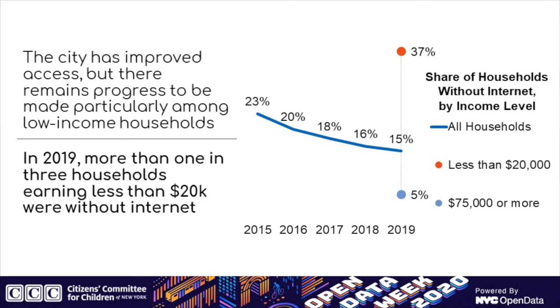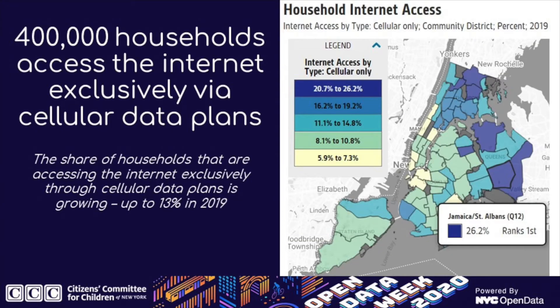Another dimension of the digital landscape is the method through which households access the internet. Increasingly prevalent are cell-only households — homes for which a cellular data plan is the only means of internet access. This was the case for 400,000 households, about one in eight, in New York City in 2019. As many as one in five households are cell-only in places like Flushing and Elmhurst-Corona in Queens, as many as 26% in Jamaica and St. Albans, and in northern Bronx areas like Williams Bridge and Bedford Park.